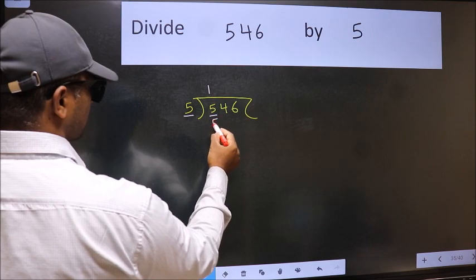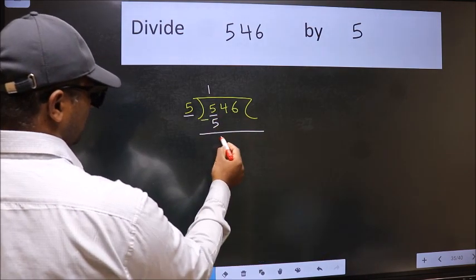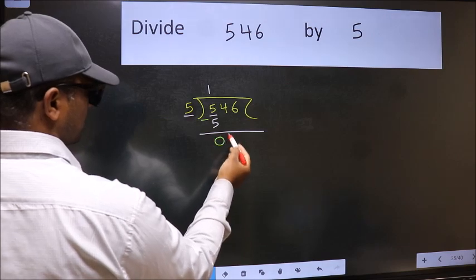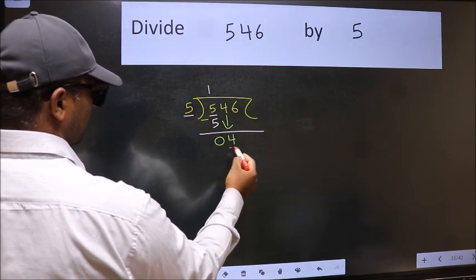5 table: 5 once 5. Now we should subtract, we get 0. After this, bring down the beside number, so 4 down. Now here we have 4 and here 5.